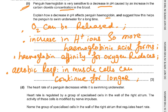To word the answer: oxygen is released from hemoglobin to supply respiring tissues. Carbon dioxide forms carbonic acid, which dissociates into bicarbonate ions and H+ ions. H+ ions combine with hemoglobin to form hemoglobinic acid, reducing hemoglobin's affinity for oxygen. Oxygen is given up, and aerobic respiration in muscle cells can continue for longer.